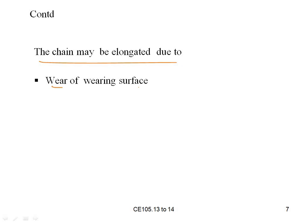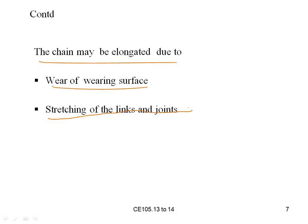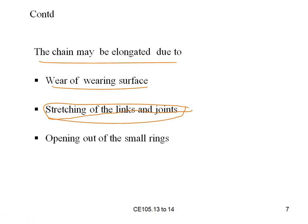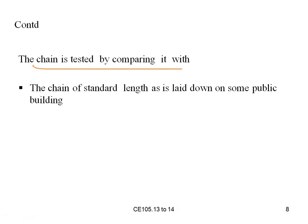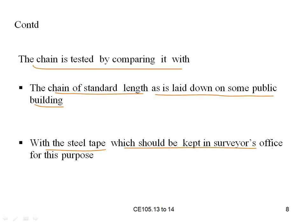The chain may also be elongated due to wearing of the surface — the rings and joints get stretched while folding or unfolding the chain, and the small rings open out. Rough handling in pulling causes the joints and links to become loose and damaged. The chain is tested by comparing it with a chain of standard length, as laid down on some public building with a steel tape, which should be kept in the surveyor's office for this purpose.